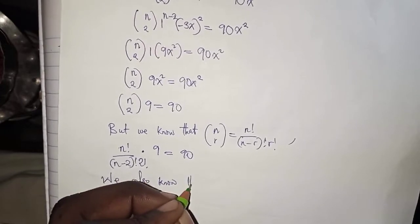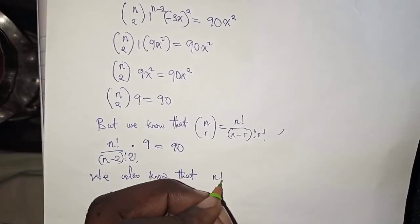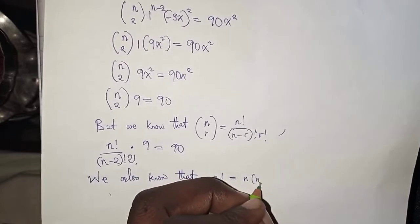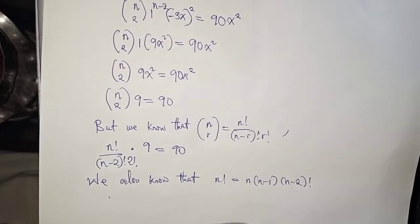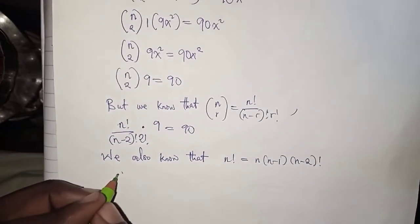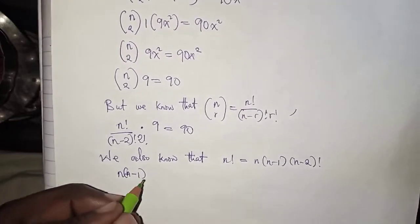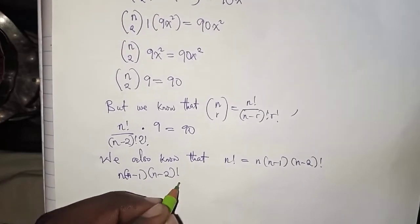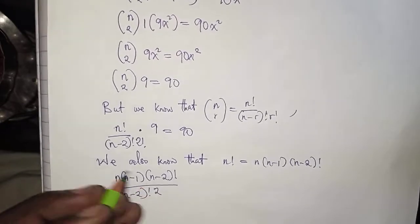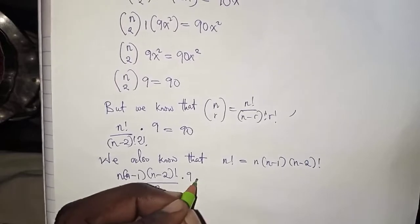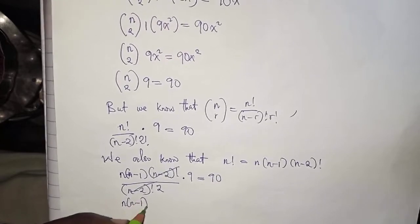We also know the formula for n factorial. Using that substitution for n factorial in the numerator, and the denominator contains 2 factorial which equals 2, we cancel the common factors.